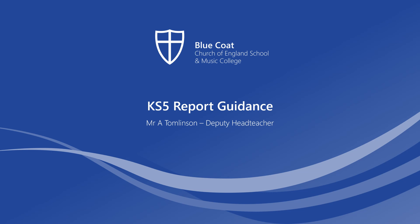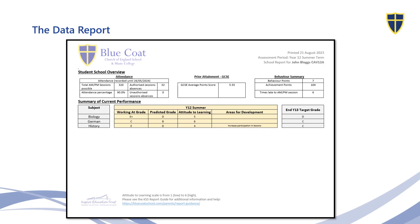This presentation will give you a brief overview of how to understand your child's Key Stage 5 report. At the top of the data report, the first piece of information you will see is the school overview, which contains a summary of attendance information, your child's prior attainment at GCSE, and a summary of their behavior, which will include behavior points, achievement points, and the number of times that they've been late to AM or PM registration.